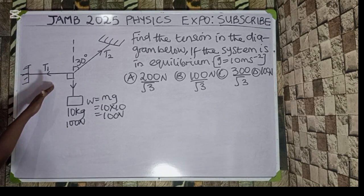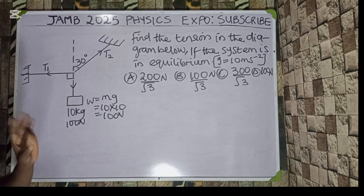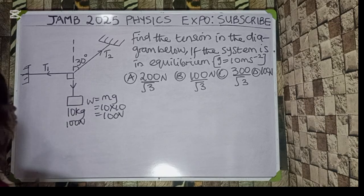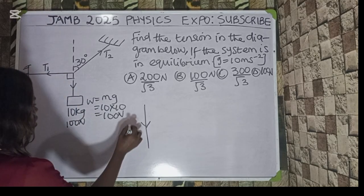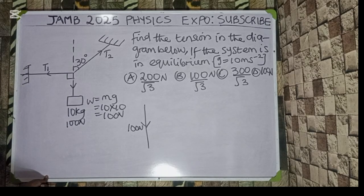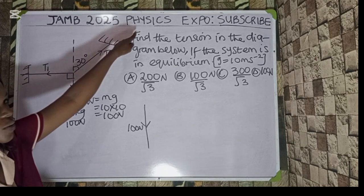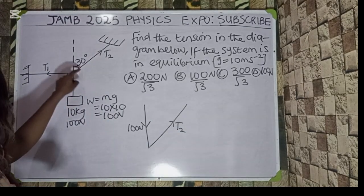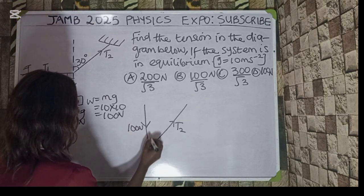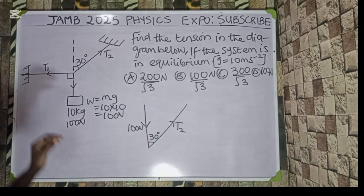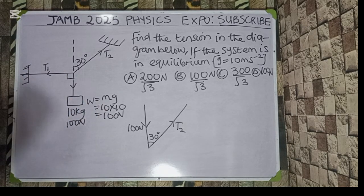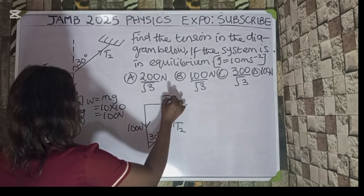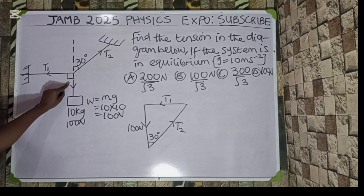The first step is to resolve this to form a triangle, following the direction the arrows are going. The weight of 100 newton is acting down. Now look at force T2 — it is going in this direction. So from the same point, I call it T2. Now T2 makes an angle of 30 degrees with the vertical, so the angle here is 30 degrees. Now look at T1 — T1 is acting in the horizontal direction. T1 makes an angle with the 100 newton at a right angle, so here is 90 degrees.